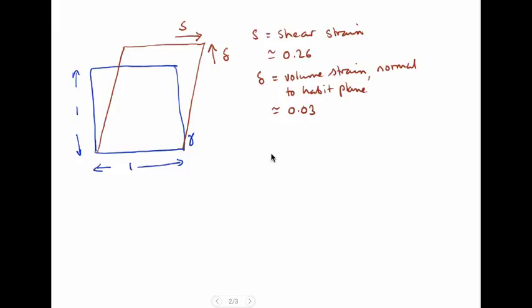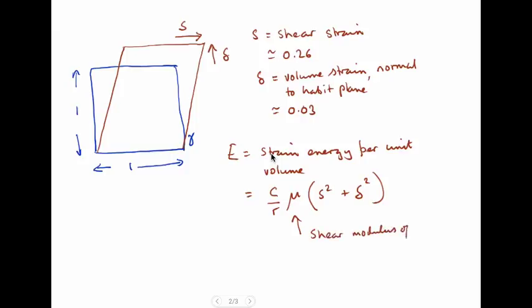The strain energy per unit volume E is given by C over R, which is the thickness over the length of the plate, into the shear modulus of the austenite, multiplied by s squared plus delta squared. This is the shear modulus of gamma. C is the thickness of the martensite and R is the length of the plate of martensite.